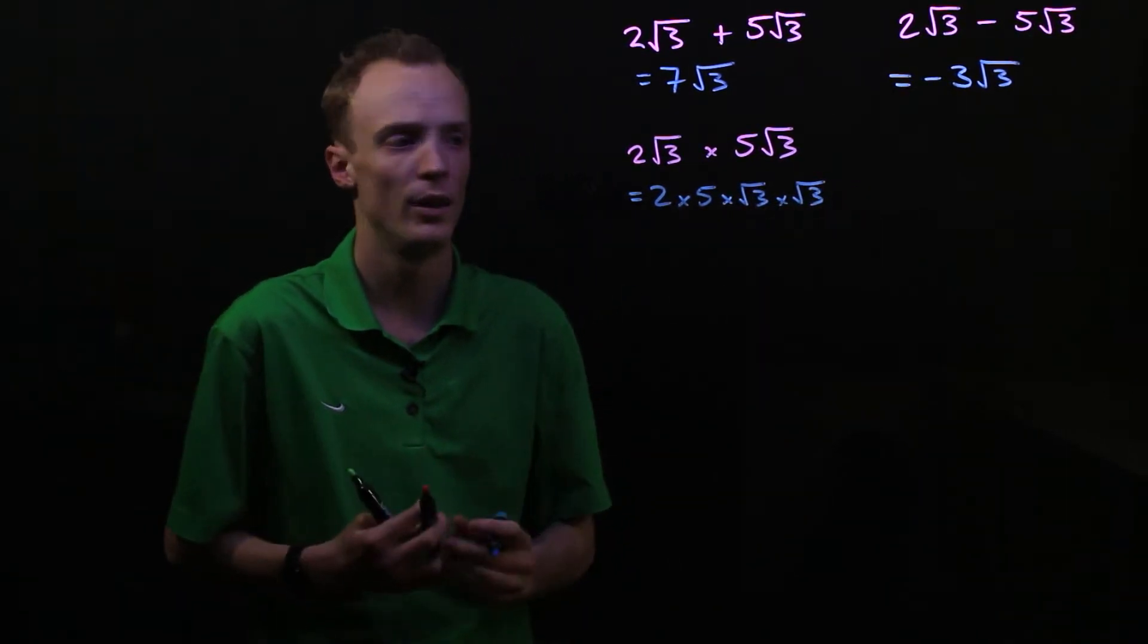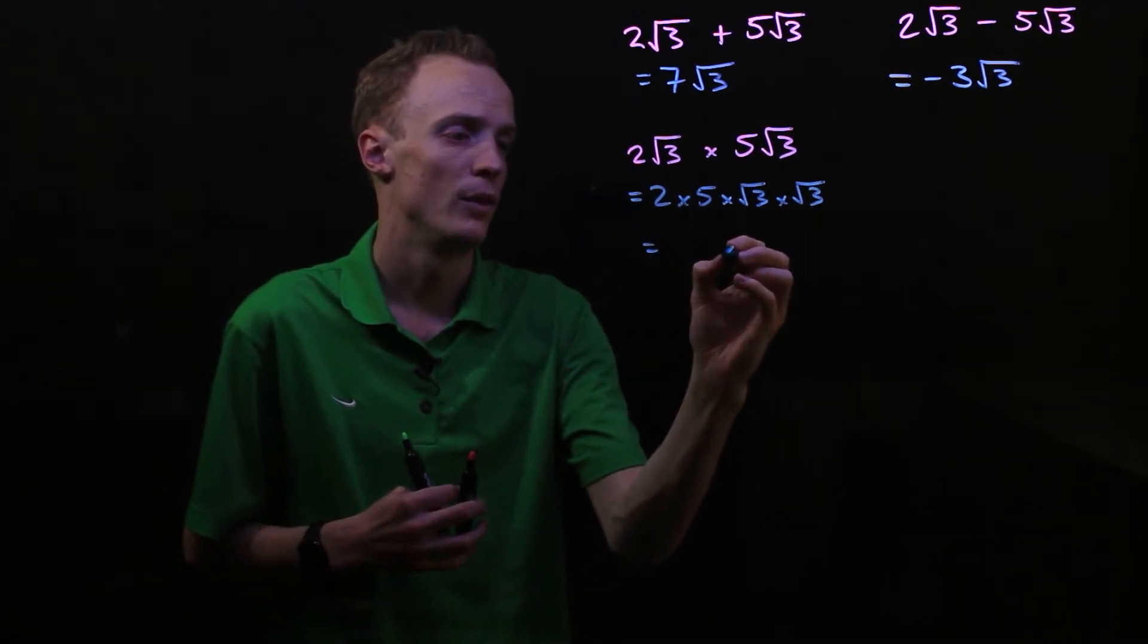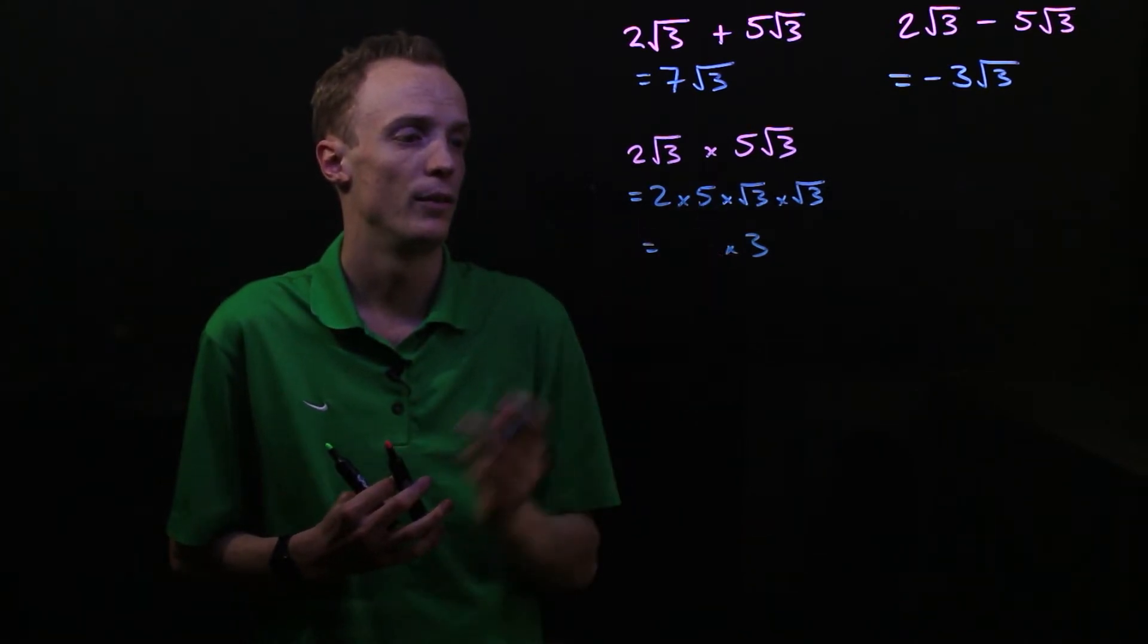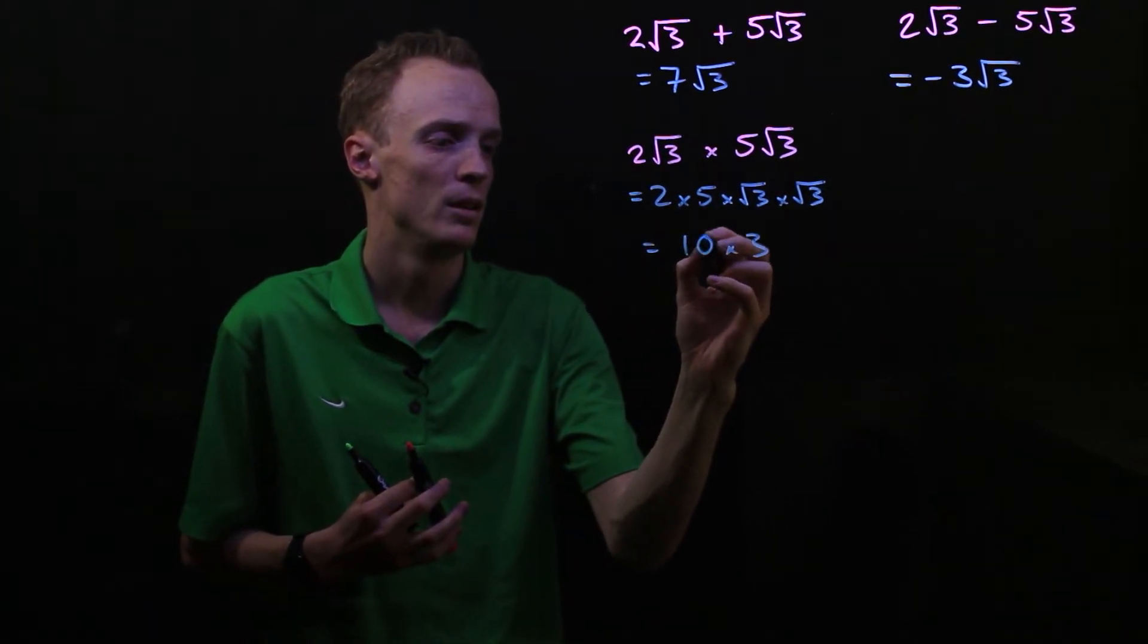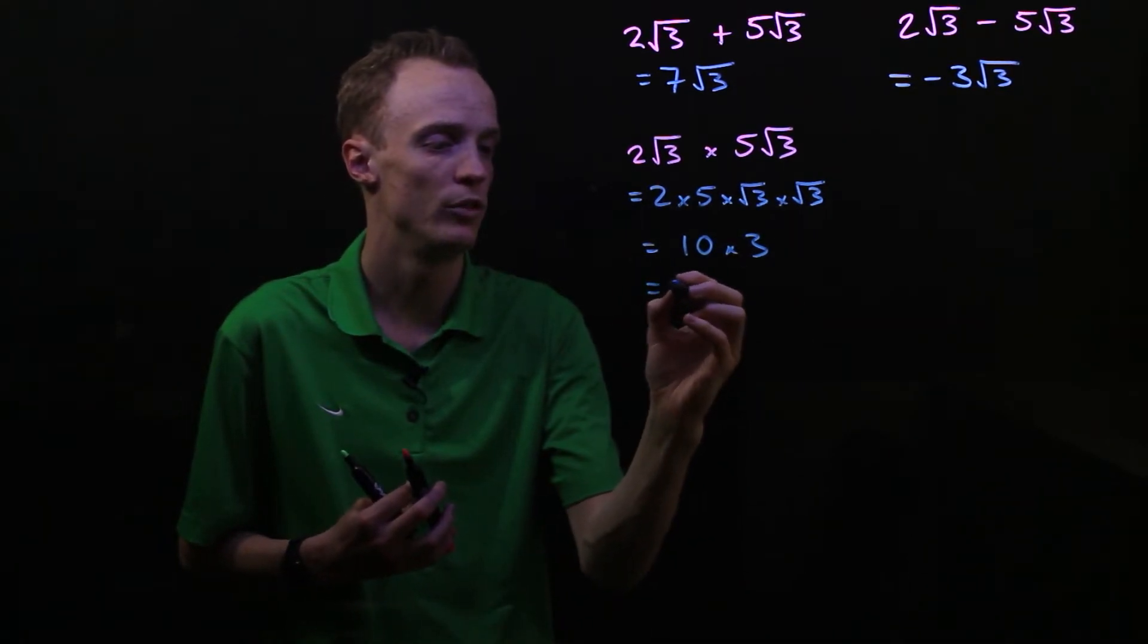Now what's nice here is √3 times √3 will simply be 3. So we're going to be multiplying here by 3, and then 2 times 5 is 10. So what we end up with in this problem is 10 times 3, which is 30.